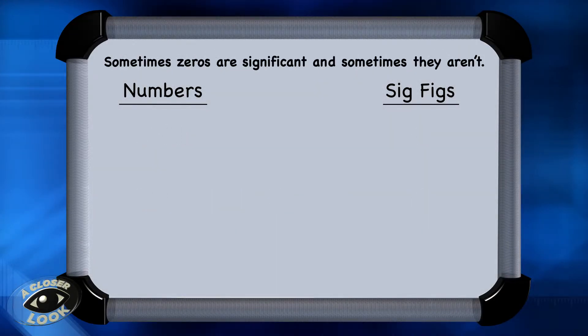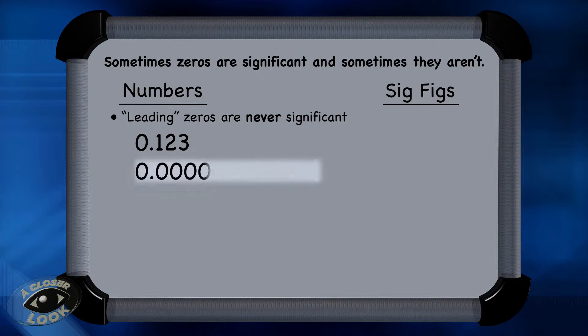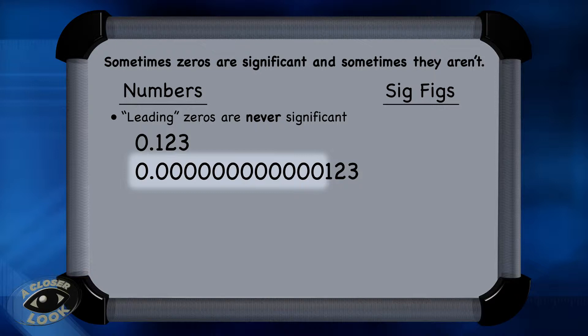Sometimes zeros are significant, and sometimes they aren't. Leading zeros are never considered significant, so this first zero would never count. None of these zeros in this value would count, because leading zeros are never significant. So in the first value, there are three sig figs, and the same thing goes for the second number.